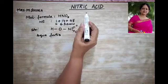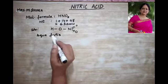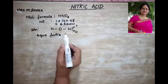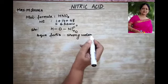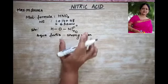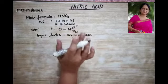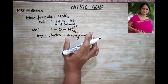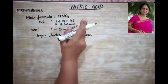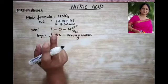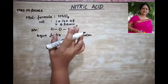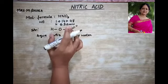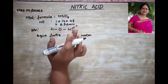Aqua fortis means 'strong water.' It is called strong water because of its corrosive action on many metals. Glauber prepared nitric acid by distilling potassium nitrate with concentrated sulfuric acid, and therefore the name nitric acid was given to it.